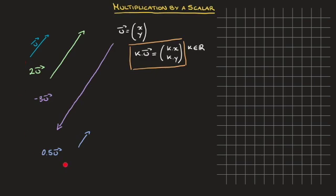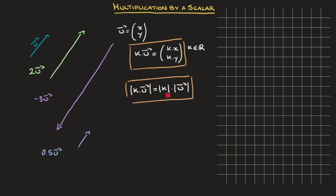We now have a good idea of what multiplying a vector by a number does to it graphically. The examples we worked through highlighted an important formula for the magnitude of k times u. Remember, the magnitude of a vector is equal to its length. When we multiply u by 2, the vector was 2 times longer; by negative 3, it was 3 times longer; by 0.5, it was half as long. This leads to the formula: the magnitude of k times vector u equals the absolute value of k times the magnitude of vector u. The absolute value of k ensures that if we multiply by a negative number like negative 3, the formula still returns a positive result.